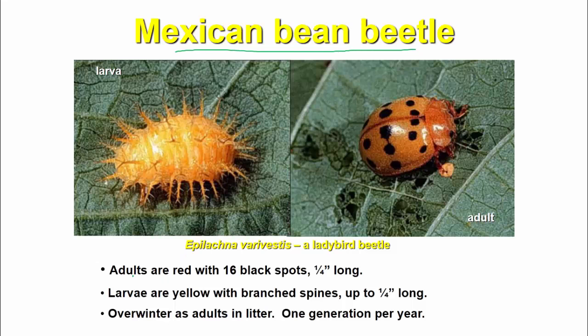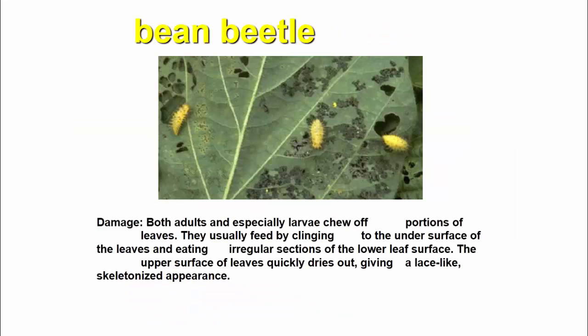The Mexican bean beetle adults are red with 16 black spots, 1/4 inch long. Larvae are yellow with branched spines, up to 1/4 inch long. They overwinter as adults in litter, with one generation per year.